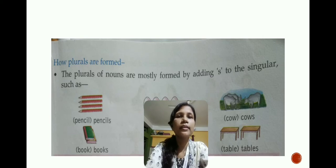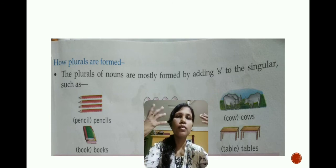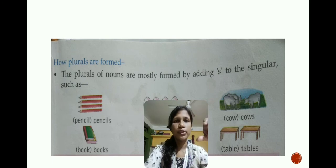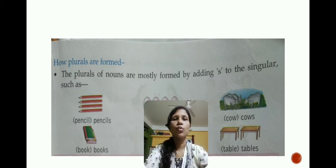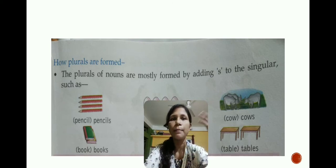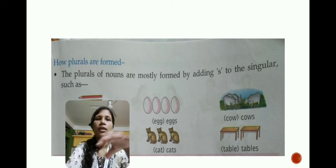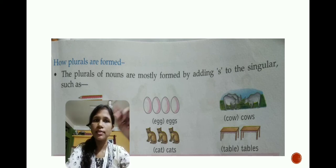Now let us learn the rules of making plurals. Rule number one: the plurals of nouns are mostly formed by adding 'S' to the singular. So when we put 'S' it becomes plural. For example: pencil becomes pencils, book becomes books, egg becomes eggs, cat becomes cats, cow becomes cows, and table becomes tables. These are the plurals made by adding the simple 'S'.